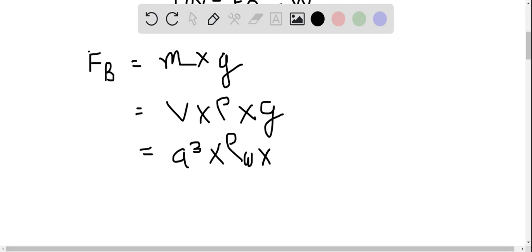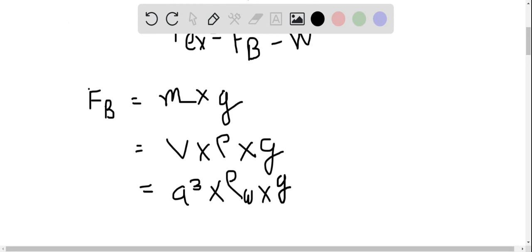We have the gravitational force g. Next we have the weight of the box, which is equal to a cubed into the density of the box into gravitational force.